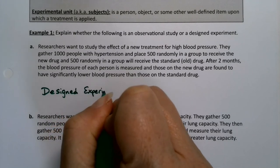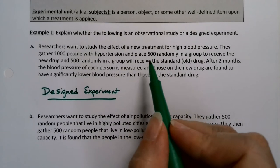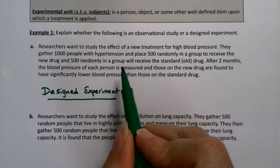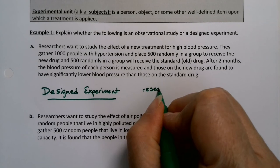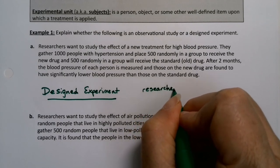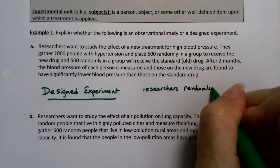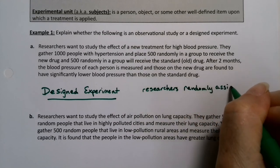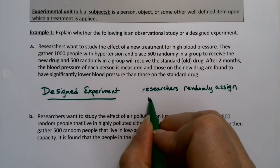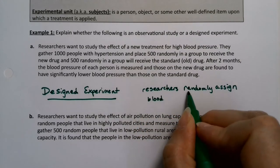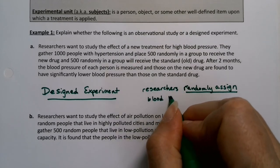The researchers are administering drugs, which is a sign. The random assignment — they've randomly placed subjects into groups — is key. So the researchers randomly assign the blood pressure drug, and that random assignment is what makes this a designed experiment.